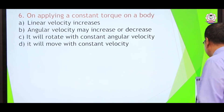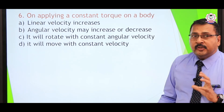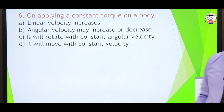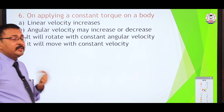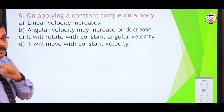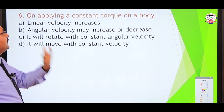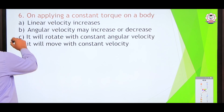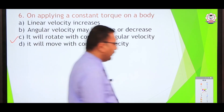On applying a constant torque on a body, what happens? Linear velocity cannot be determined; angular velocity may increase or decrease — but with a constant torque it will rotate with constant angular velocity. So the answer is c.